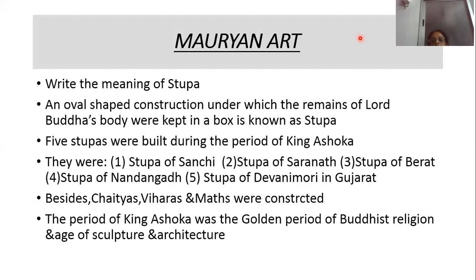Besides those five Stupas, during King Ashoka's period, Chaityas — meaning a big hall in the Stupa — Viharas — the resting place of Buddhist monks — and Muts — the living place of Buddhist monks — were also constructed. The period of King Ashoka was called the golden period of Buddhist religion because so many Stupas, Chaityas, Viharas, and Muts were constructed and he did a lot for the spread of Buddhism.